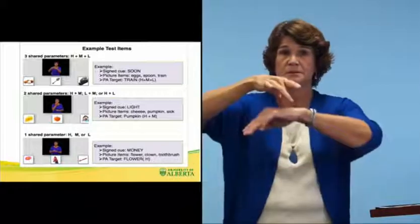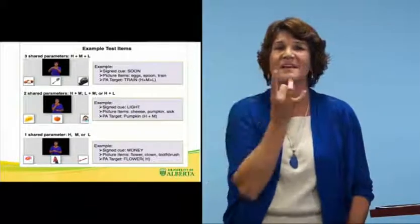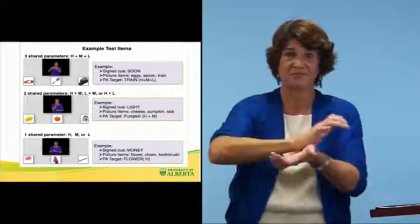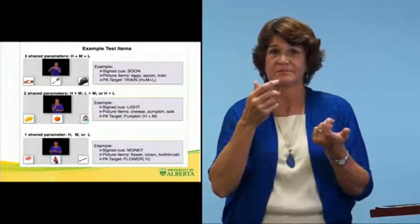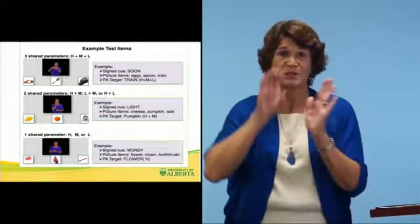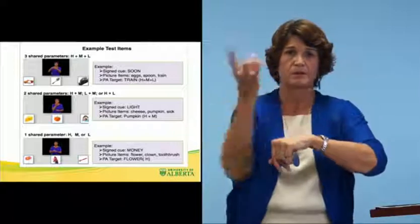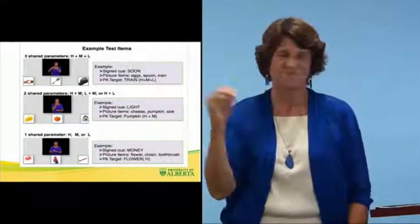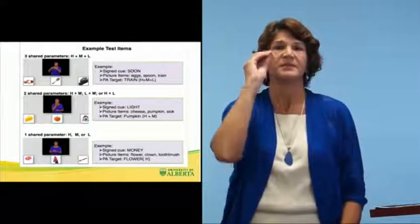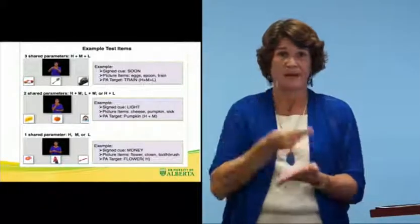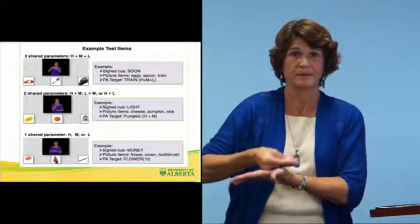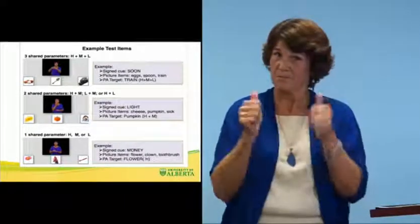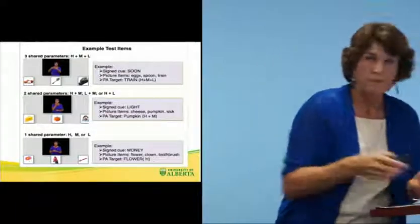The next cue sign is 'light.' The first picture is cheese, which doesn't match any parameters of handshape, movement, or location. The second picture is a pumpkin — same movement, different location, but same handshape. The third example uses 'money' as the cue sign, and the first picture of a flower matches the same handshape. This illustrates how the test progresses through various parameter combinations.